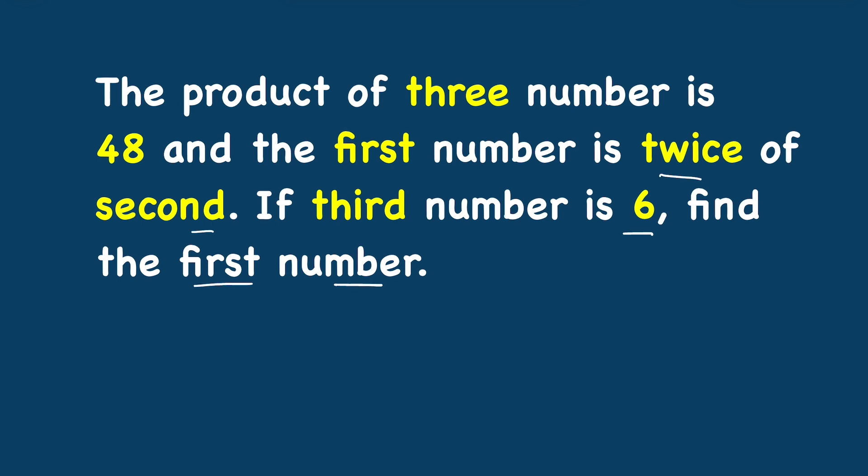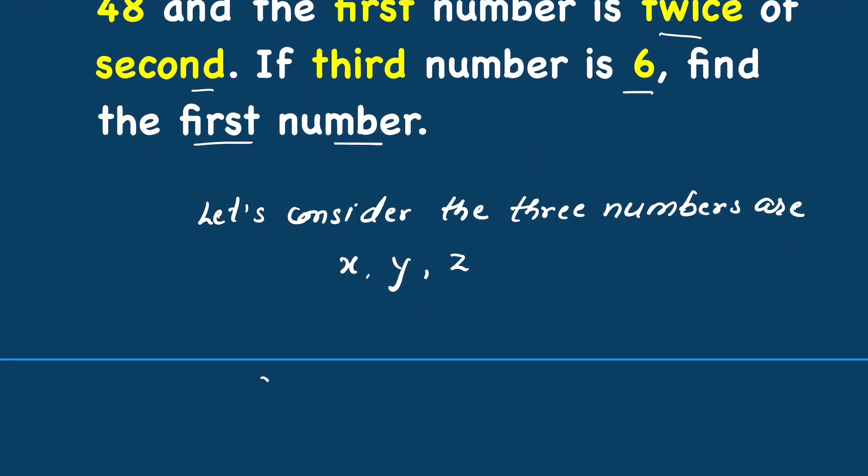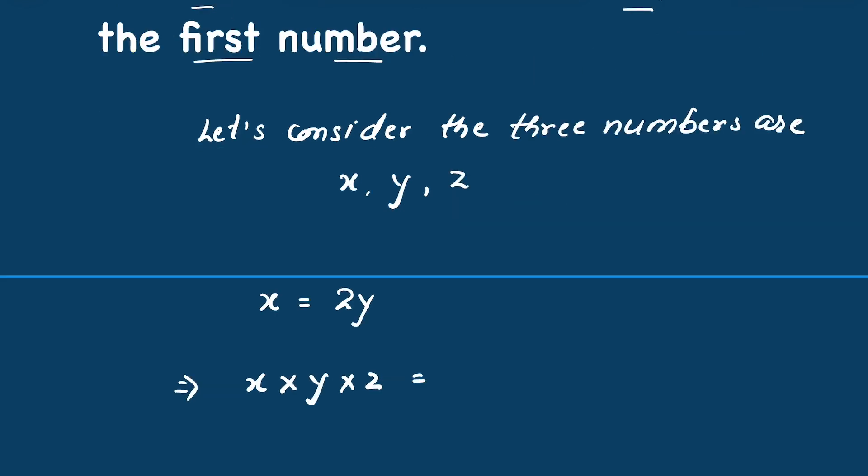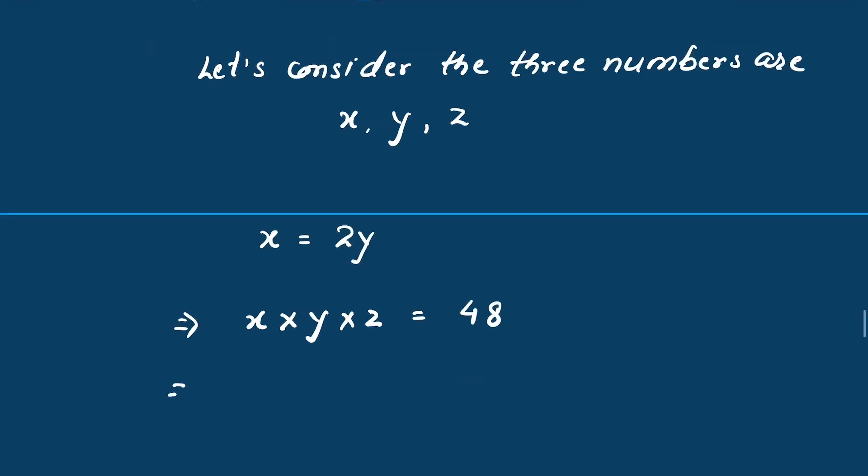Let's consider the three numbers are x, y, and z. As per the question, x is twice the second number, that is y, and the product of three numbers is 48.